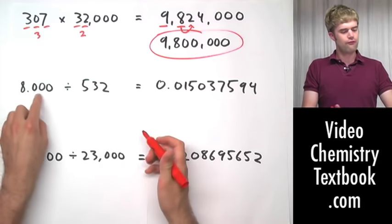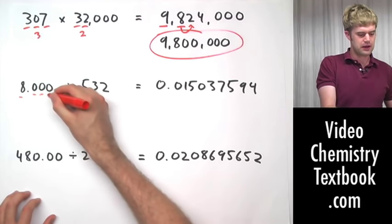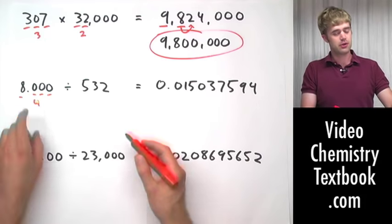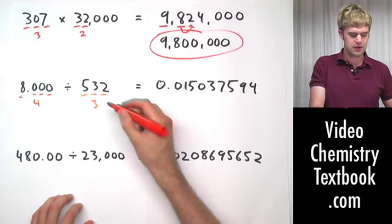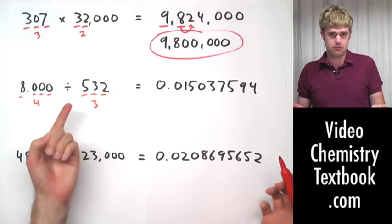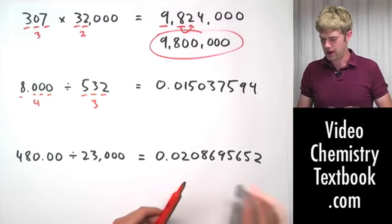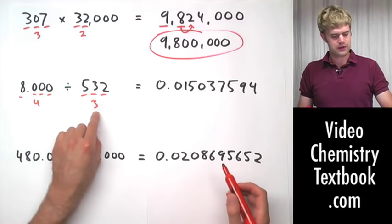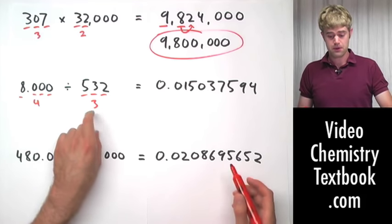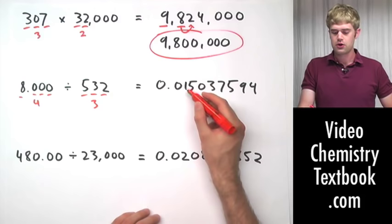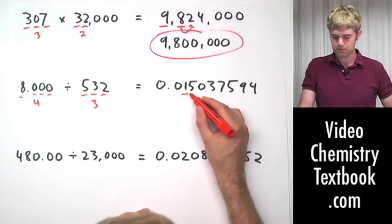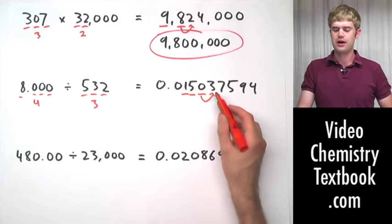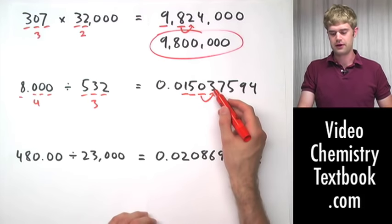Let's look at this one here. Four significant figures here because zeros to the right of a non-zero number are significant and there's a decimal place in the number — that's easy. Three significant figures here because there are no zeros; they're all non-zero digits, always significant. Which means that we're going to round this to the lower of them, to three, so we're going to go one, two...